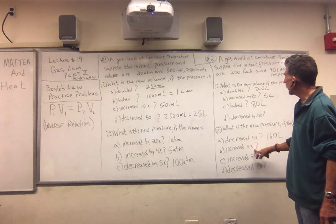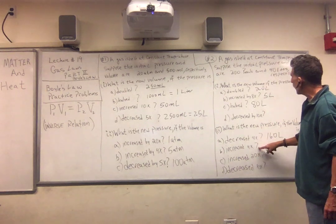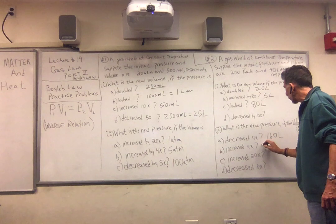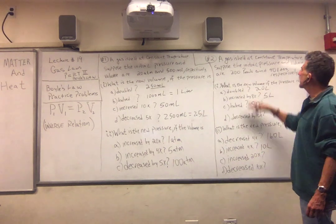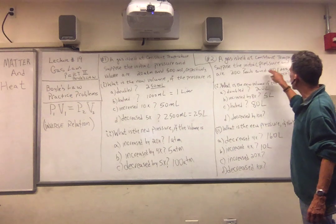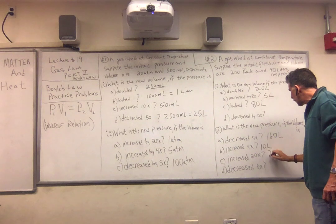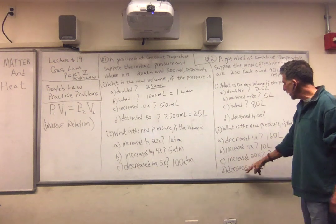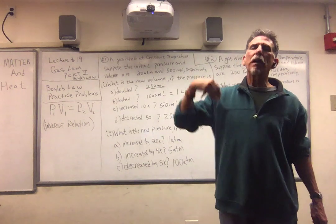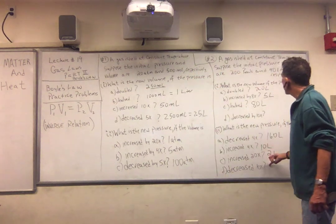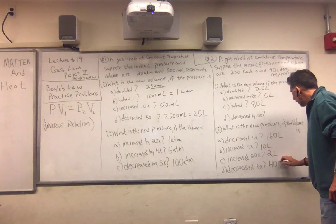If we increase the pressure by 4 times, then the volume must decrease by 4 times: 40 divided by 4 is 10 liters. If we increase the pressure by 20 times, the volume must decrease by 20 times: 40 divided by 20 is 2 liters. And if we decrease the pressure by 10 times, the volume must increase by 10 times: 10 times 40 is 400 liters.